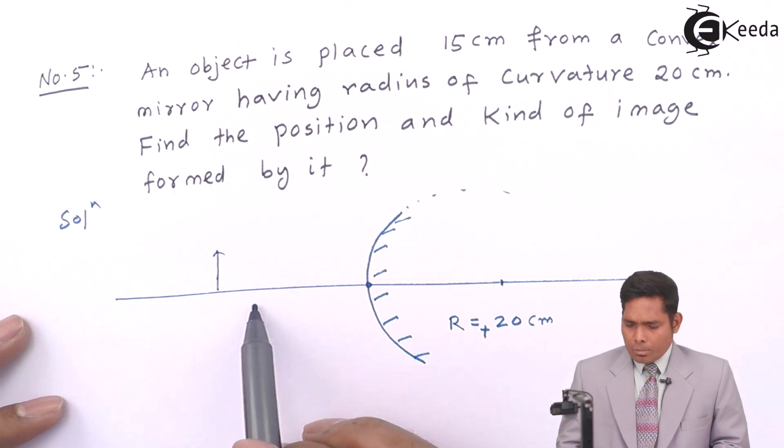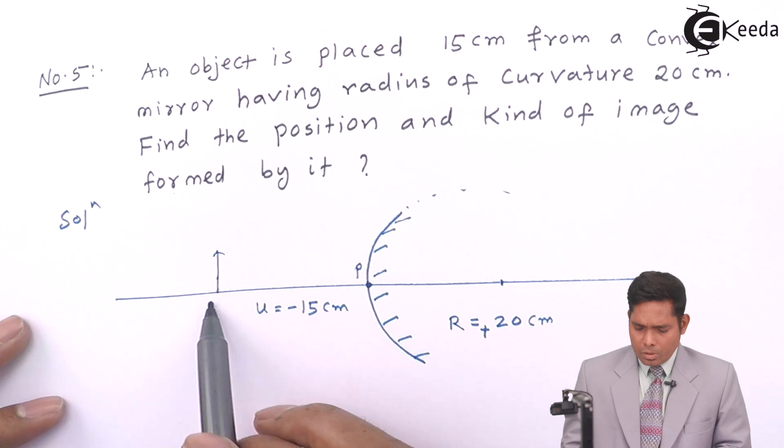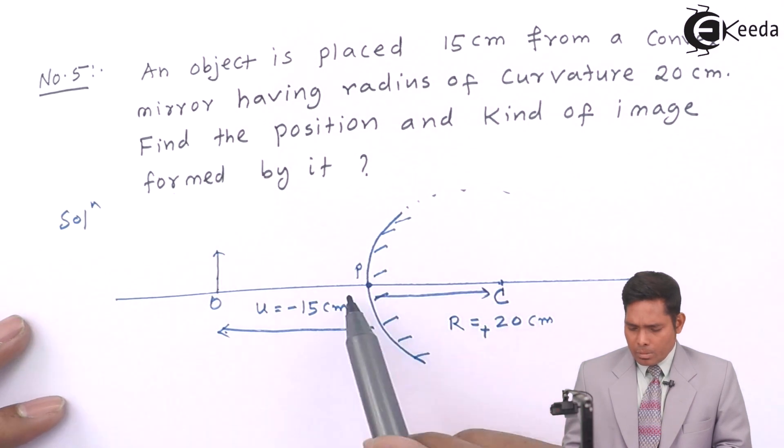The object is placed 15 cm somewhere here. This distance is u, which is negative 15 cm. Why negative? Because this point P is here, the object is here. This distance is measured from pole towards the object, so it is negative.